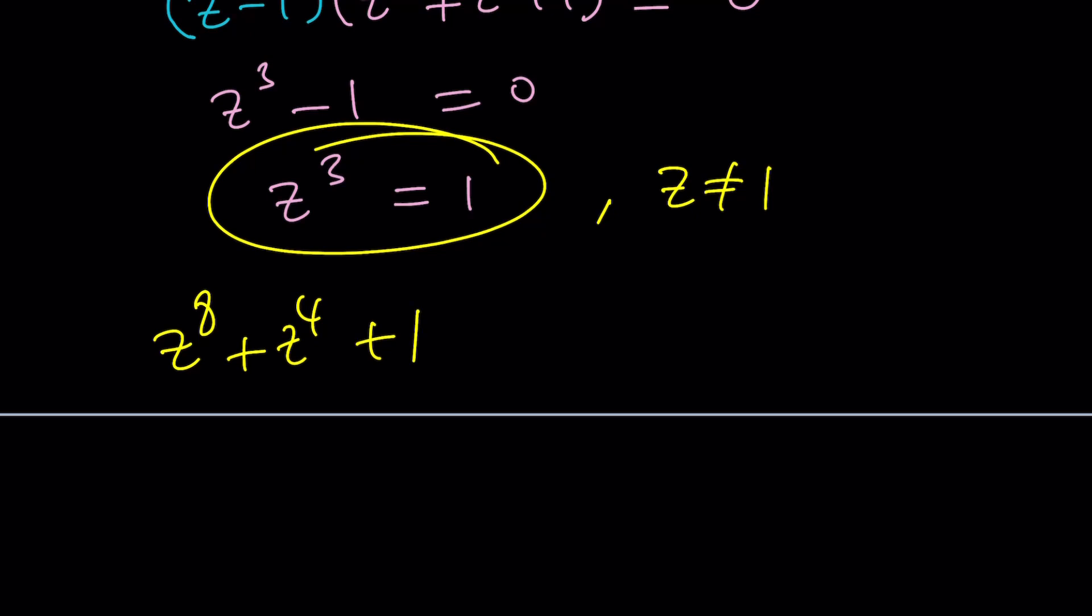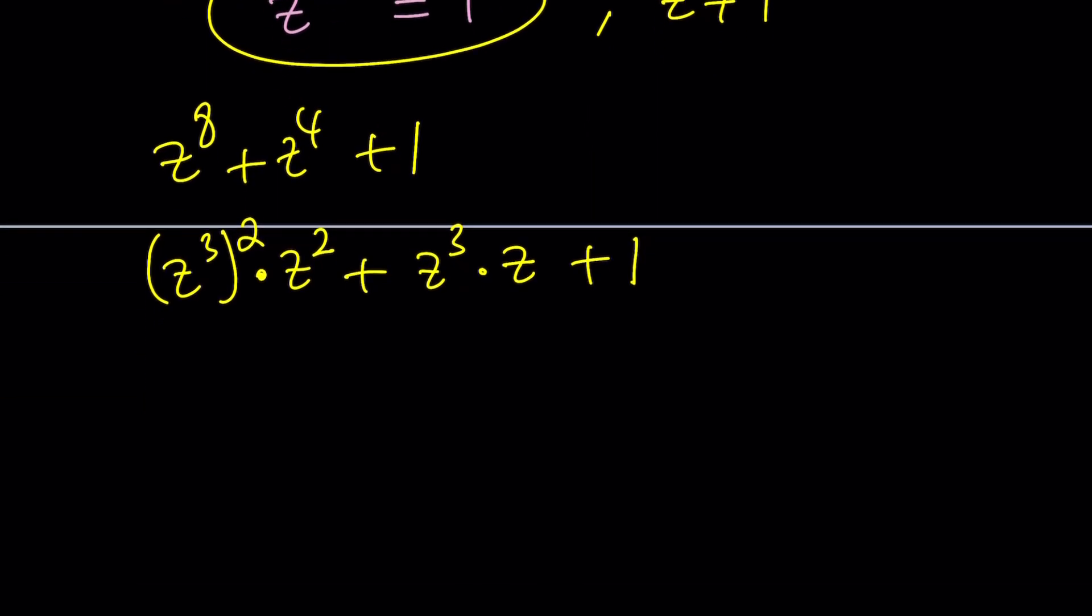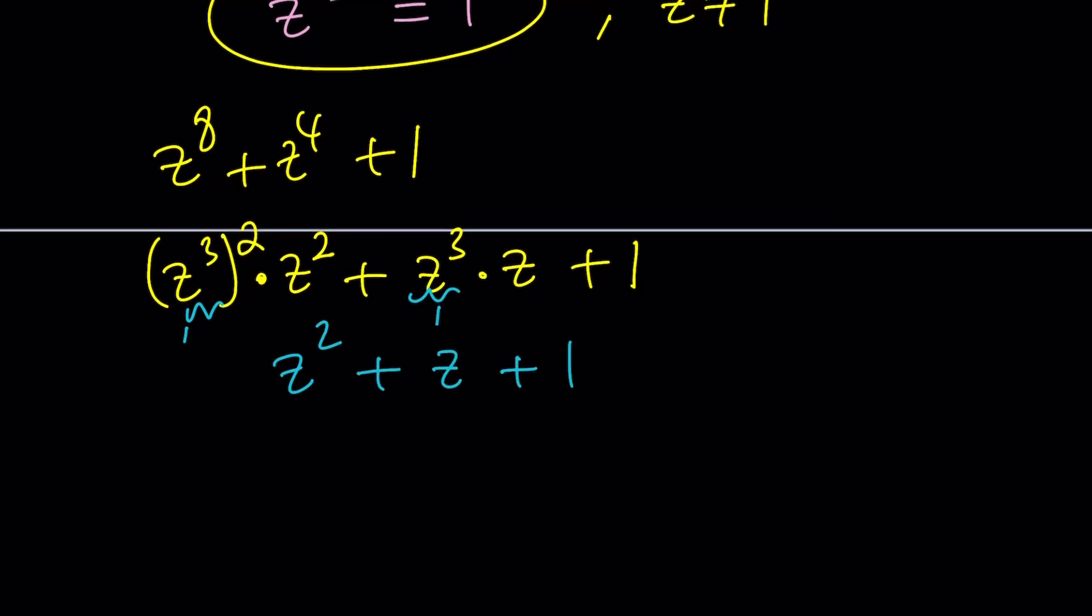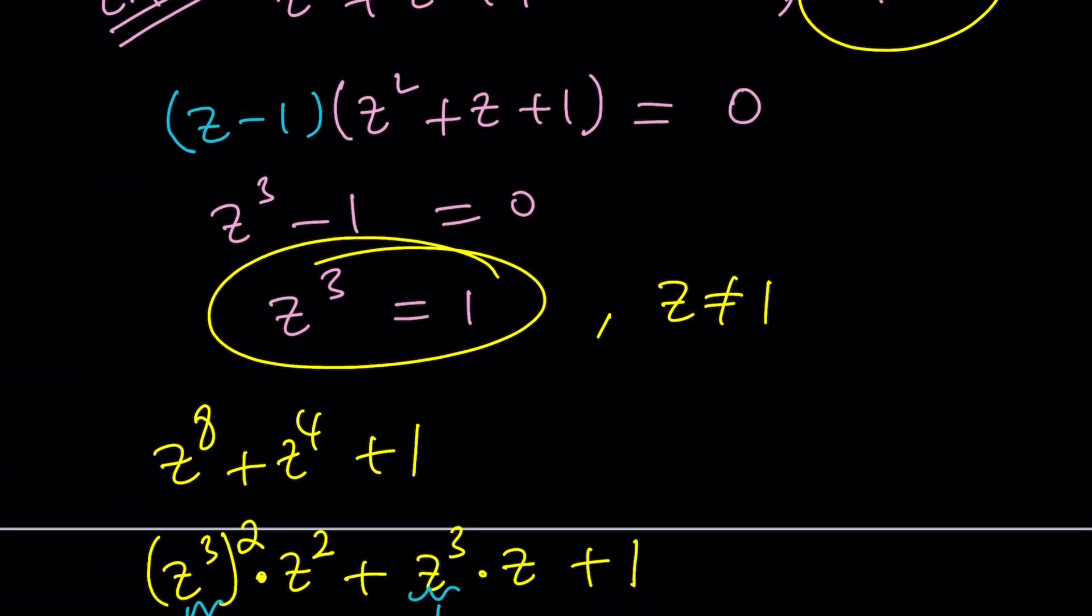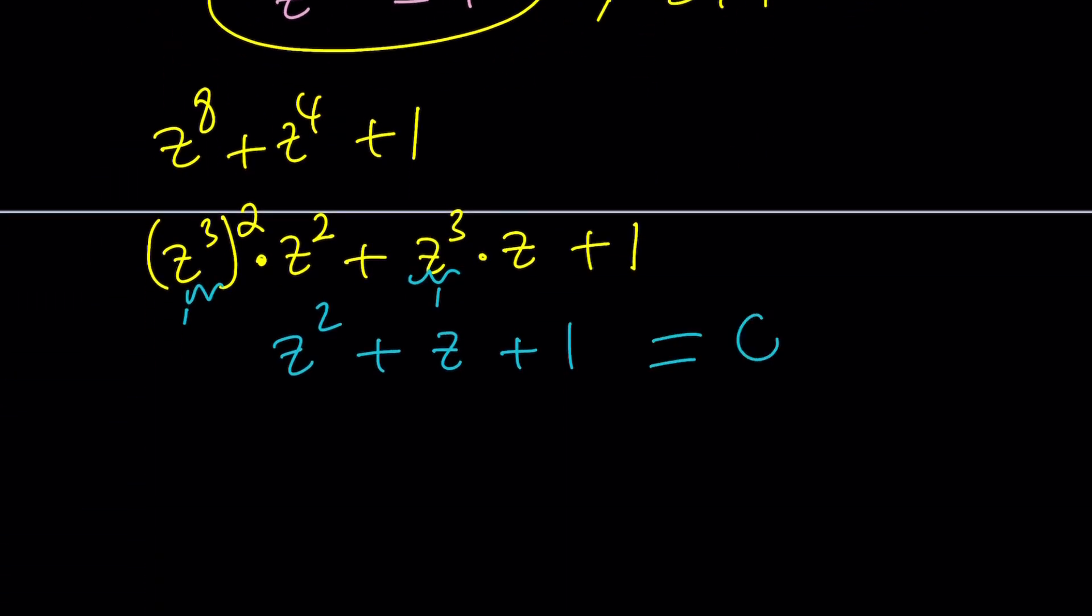And now we're supposed to evaluate z to the eighth plus z to the fourth plus 1. Now z to the third can be squared. That's going to give us z to the sixth. And then multiply by z squared to get z to the eighth. Make sense? 6 plus 2 equals 8. And z to the fourth can be obtained by multiplying z cubed by z. And now we're going to use the fact that z cubed equals 1. Again, z does not equal 1, but z cubed equals 1. So that's kind of like a complex situation. So this is 1. This gives us z squared. This is 1. So that gives us z and plus 1. And guess what? This is the same thing as the original equation, z squared plus z plus 1. And that's equal to 0.